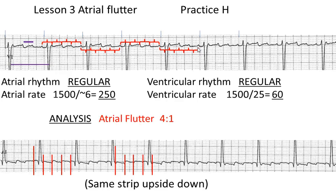So our answer would be atrial flutter with a constant ratio of four to one — four atrial impulses or flutter waves per each QRS.